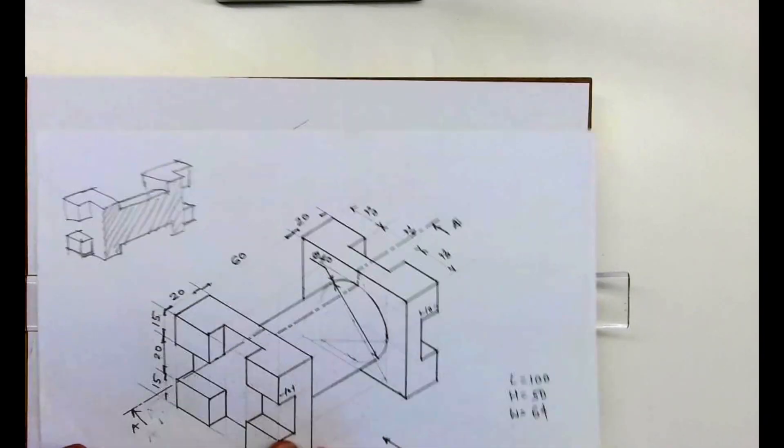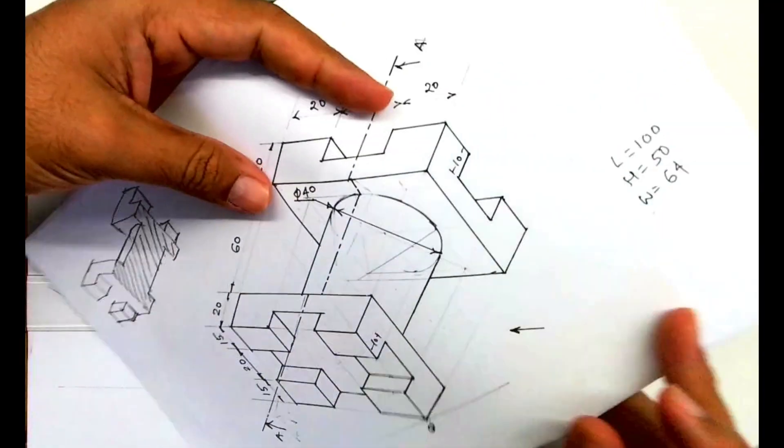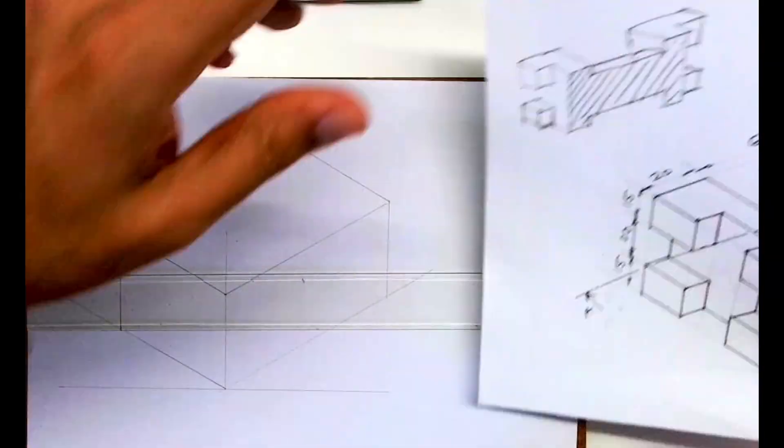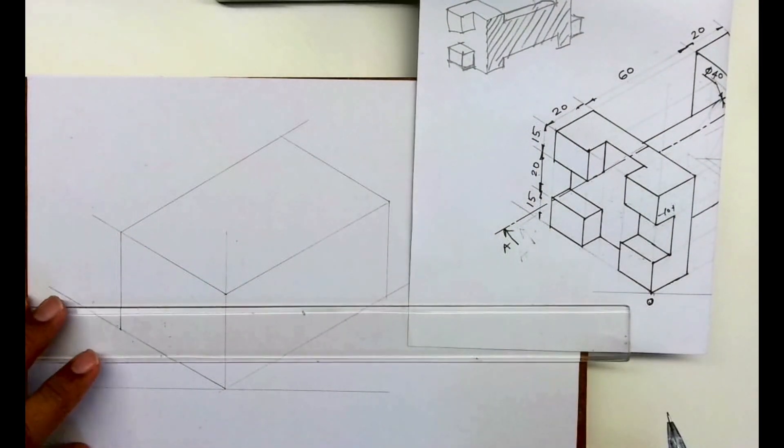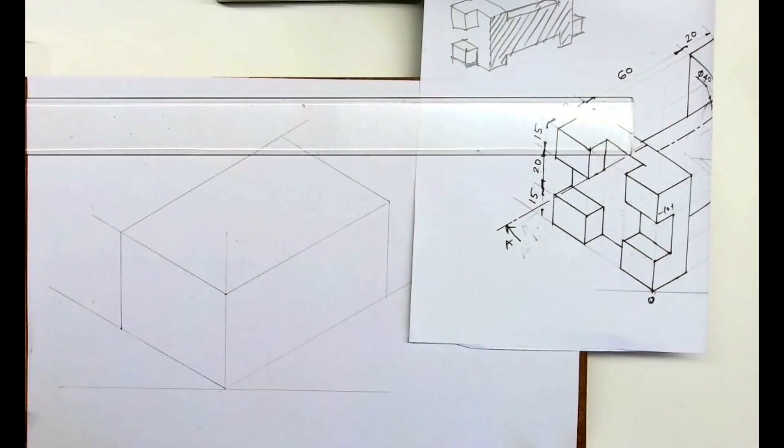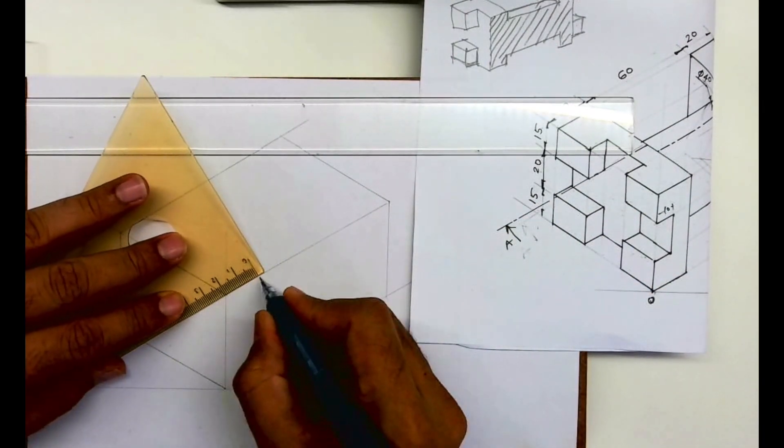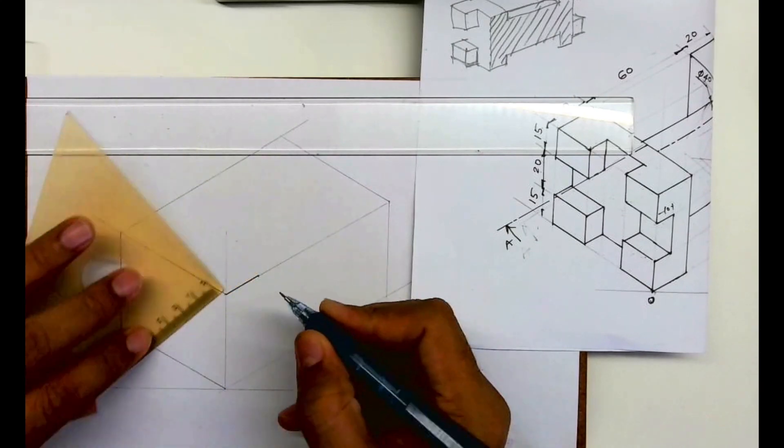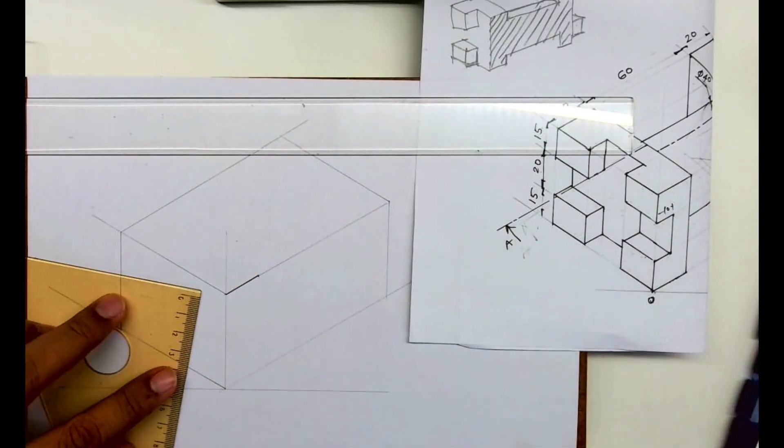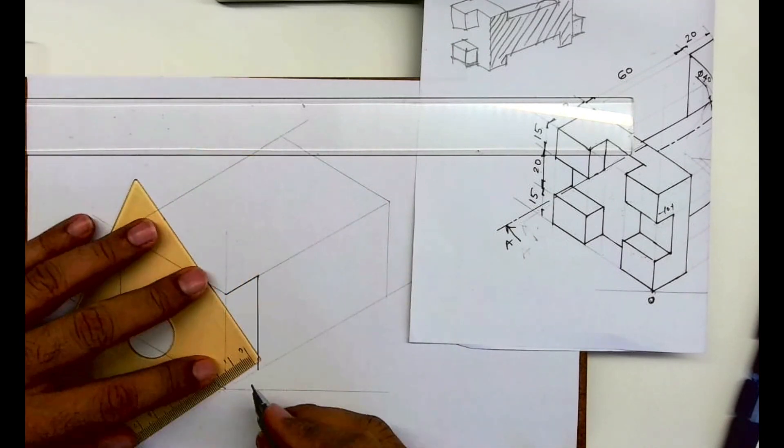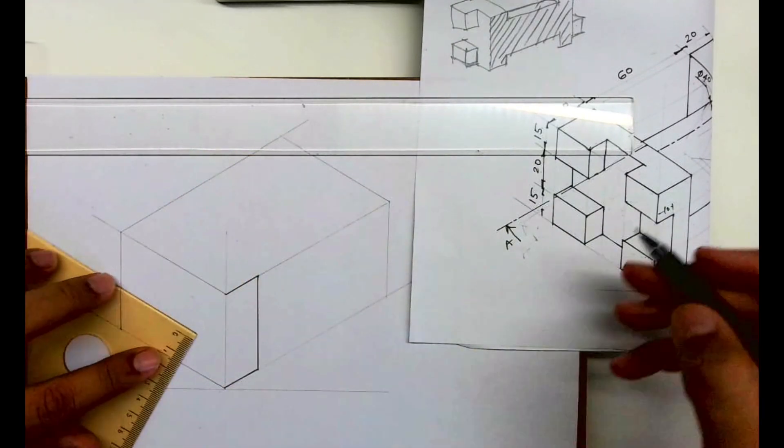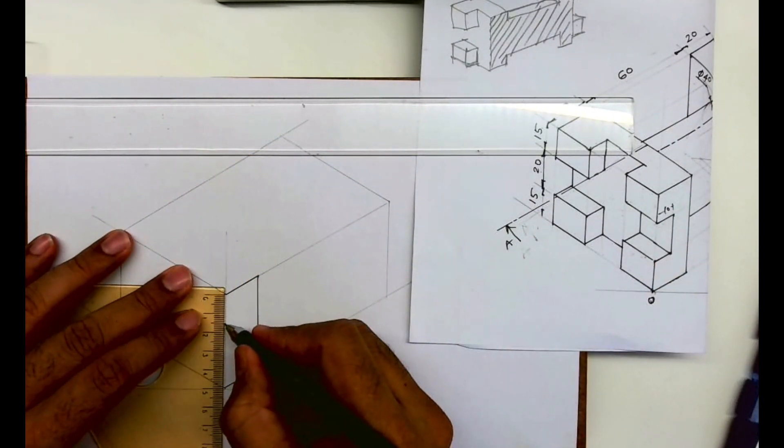Now we'll draw this part. How much is this? 20. See, this is 20. So I'll mark 20, then I will draw vertical line.